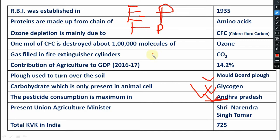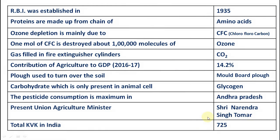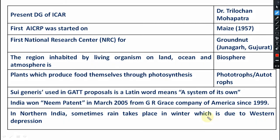For fertilizer consumption, if you consider state-wise, then it is Punjab. But for pesticide consumption, it is Andhra Pradesh. Present Union Minister of Agriculture is Shri Narendra Singh Tomar. Total present KVKs in India — that is 725. These figures may change in future, so please stay updated.